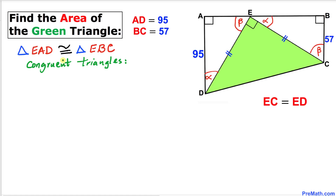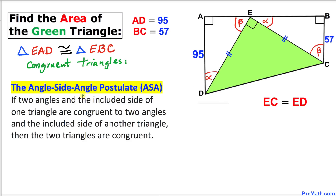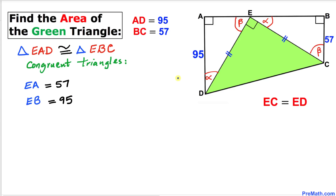We conclude that triangle EAD and triangle EBC are congruent triangles according to the angle-side-angle postulate. Therefore, this side AE is going to be 57 units and this side EB has got to be 95, since these two triangles are congruent.